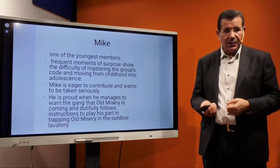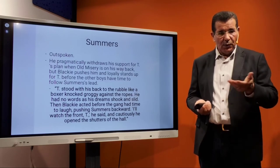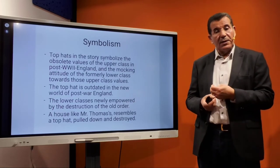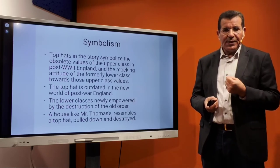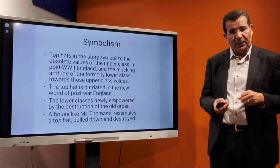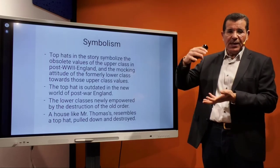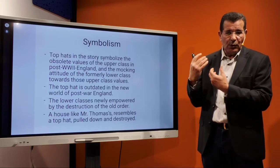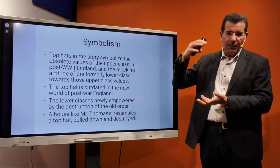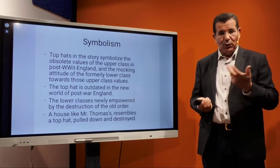Mike is proud and eager to contribute like the others. Summers is outspoken, and though he initially opposed, he also became involved. So all the characters — Mike, Blackie, Summers — are drawn in. Regarding symbolism: top hats in the story symbolize the obsolete values of the upper class in post-Second World War England, and the mocking attitude of the formerly lower class toward those upper-class values. The top hat is outdated in the new world of post-war England. The house stands like a man in a top hat — and the lower class is newly empowered by the destruction of the old order. A house like Mr. Thomas's, resembling a top hat, is pulled down and destroyed.